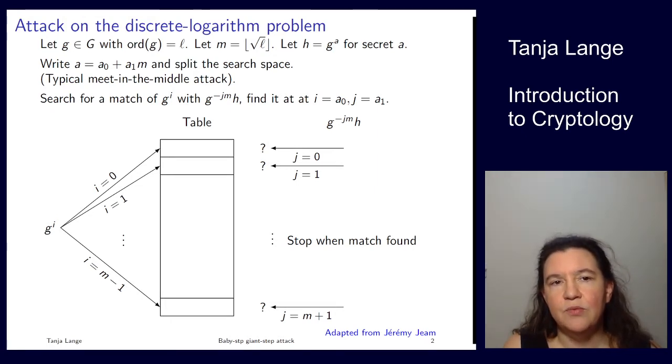To recap the settings, we work in a group G generated by lowercase g, and G has some group order L. I've motivated that L should be prime, but for this attack to work it doesn't actually matter. We have some number M, which is about the square root of L, and I like to round down. So even if it's 4.7, I would use 4.